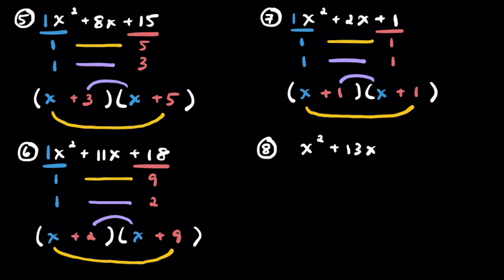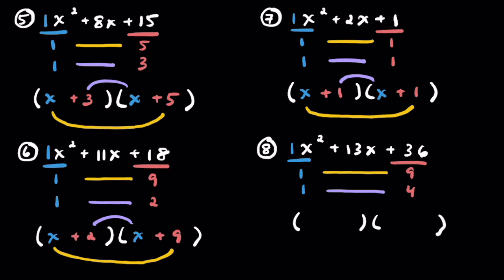Feel free to pause the video whenever you need to if I'm going a little too fast or need a break — go at your own pace. For problem 8: x squared plus 13x plus 36. We have 1 and 1. For 36 this time, we'll go with 9 and 4 — since we used 12 and 3 earlier. These pair as outers and inners. Filling in: (x + 9)(x + 4). Just make sure you're pairing outers with outers and inners with inners.